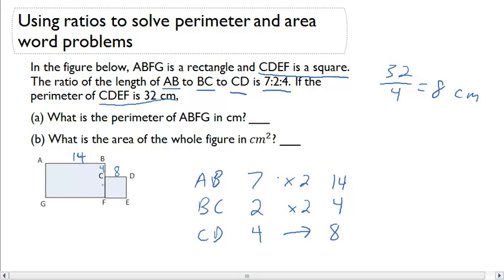This little part right here is 4, and I know this side also has to be 8, because it's a square. This whole side therefore is 12. So I'm going to have 14 times 2 plus 12 times 2. That's going to give me 28 plus 24, which is going to be 52 centimeters.